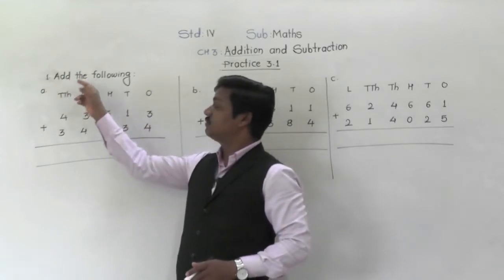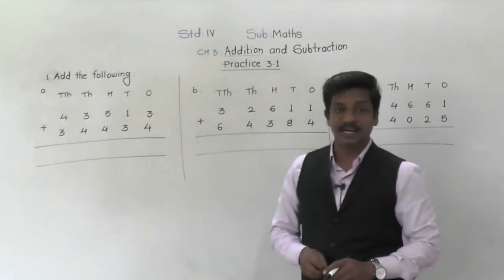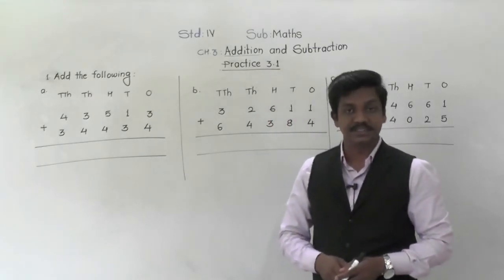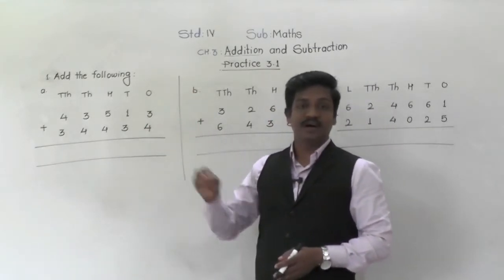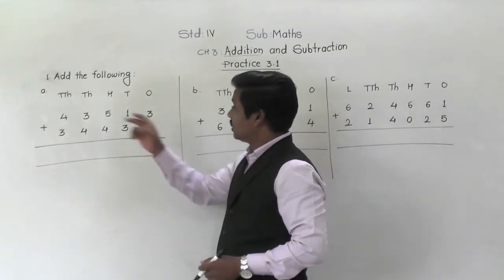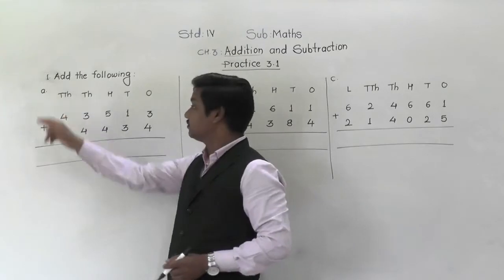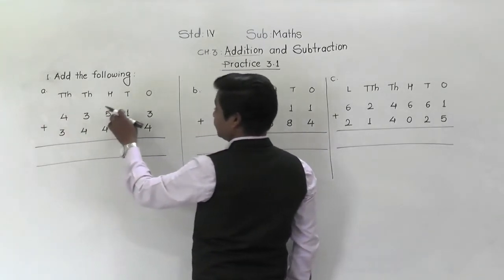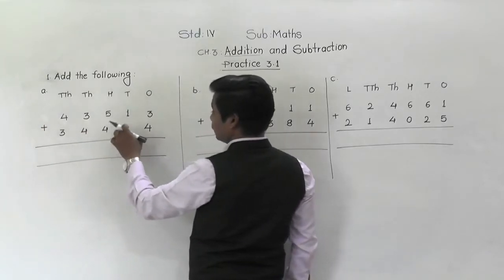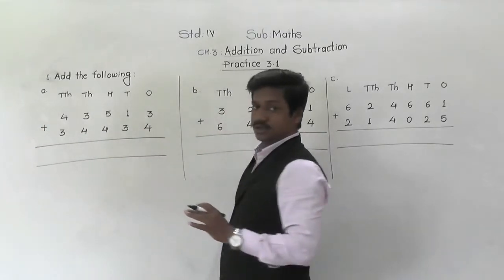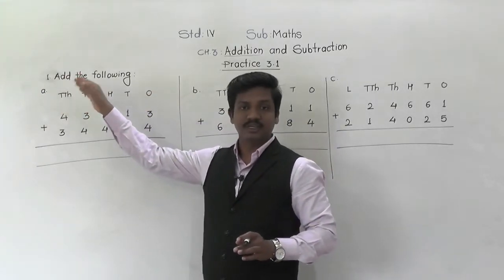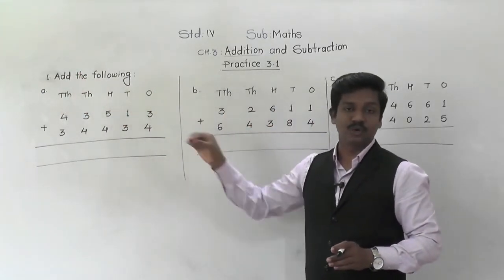The first question says 'add the following.' In this class we are dealing with five-digit and six-digit numbers, so here we have to add five and six digit numbers. The first example in question one is 43,513 plus 34,434. You have to solve this in the textbook because the space is given there.